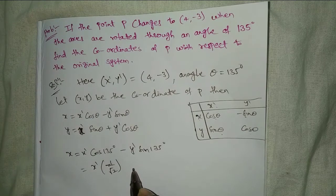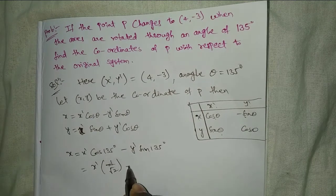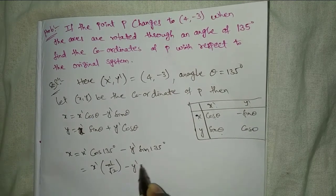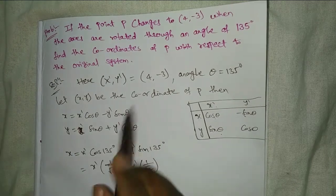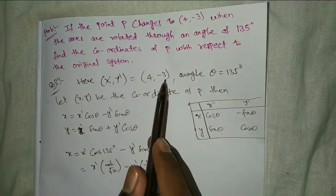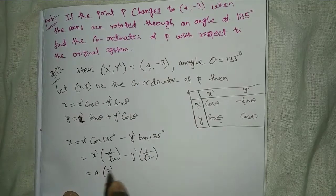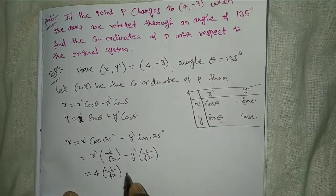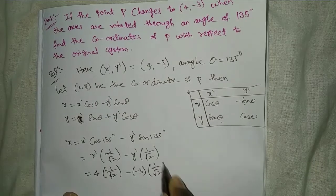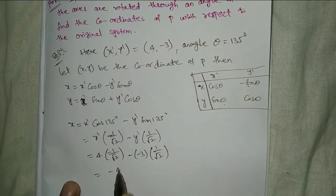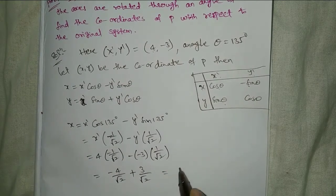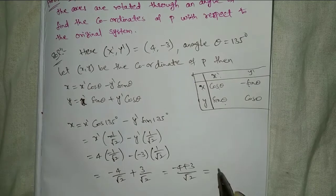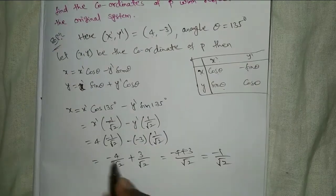Minus y dash, sin 135 degrees is positive 1 by root 2. Now x dash is 4, y dash equal to minus 3. So 4 into minus 1 by root 2, minus minus 3 into 1 by root 2. That gives minus 4 by root 2 plus 3 by root 2, equal to minus 4 plus 3 by root 2, equal to minus 1 by root 2. This is x.